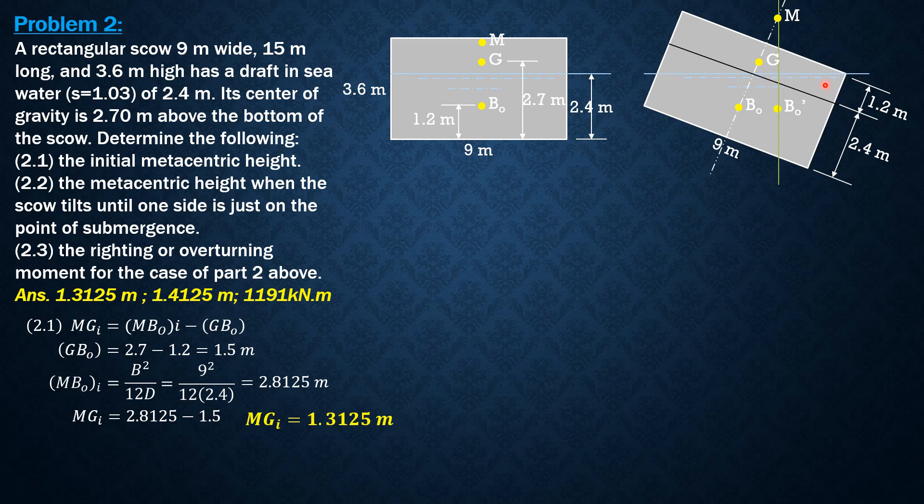MB₀ is expected to increase a little because of the tilting, and because the waterline section is now increased—it is greater than in the upright position. This is the tilting angle theta.